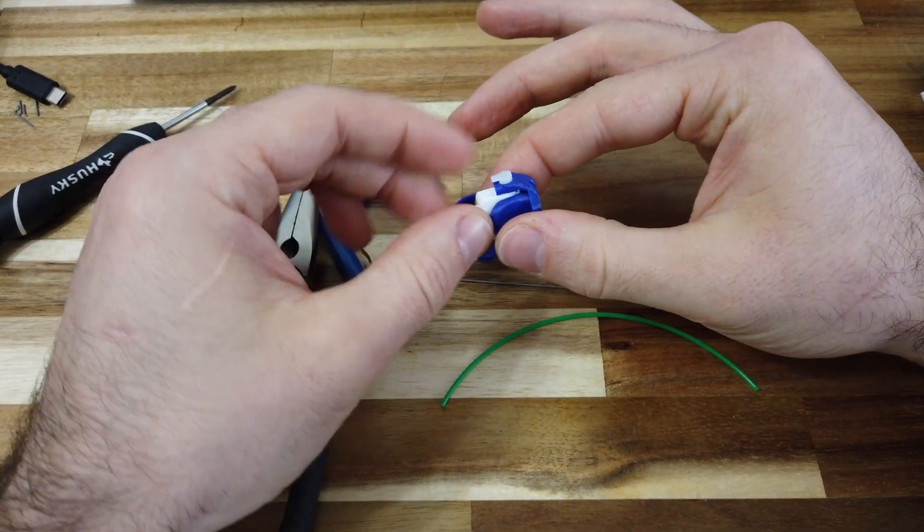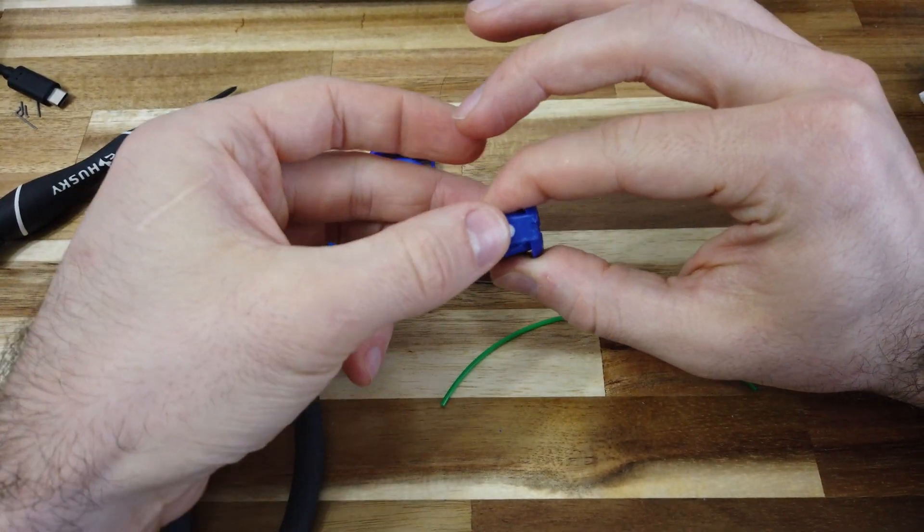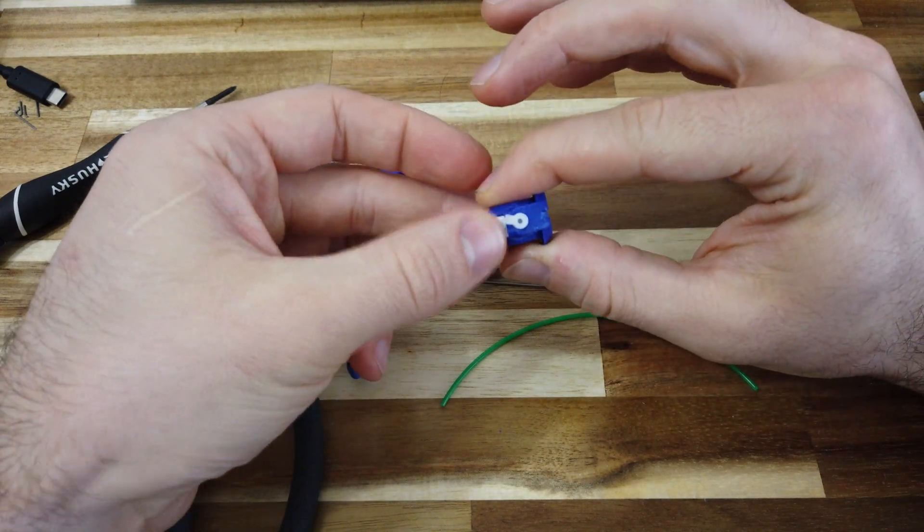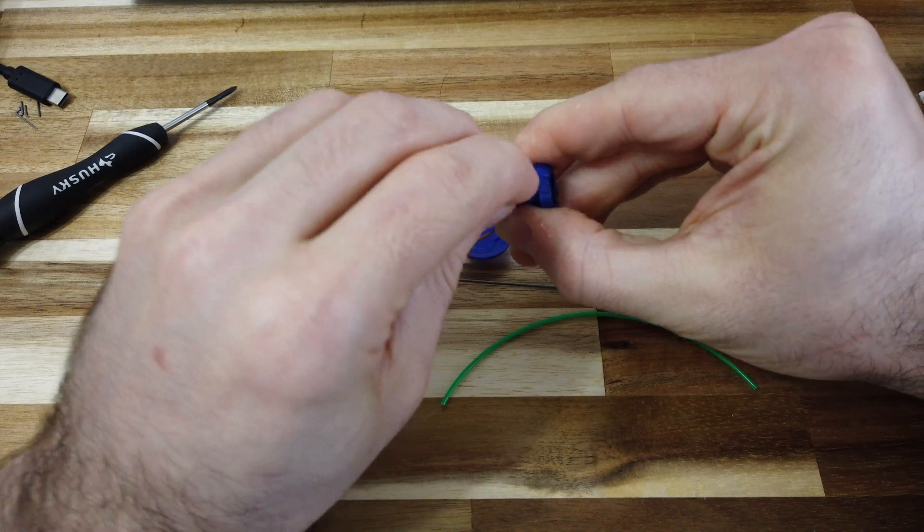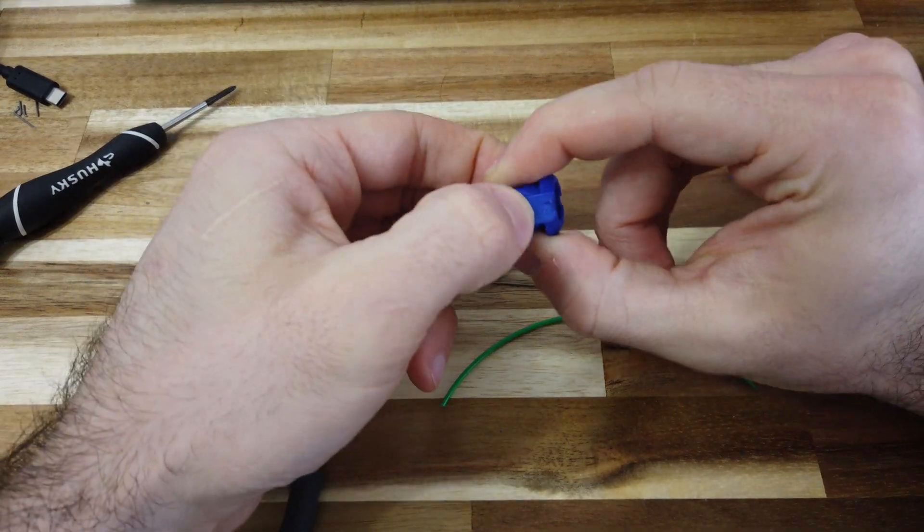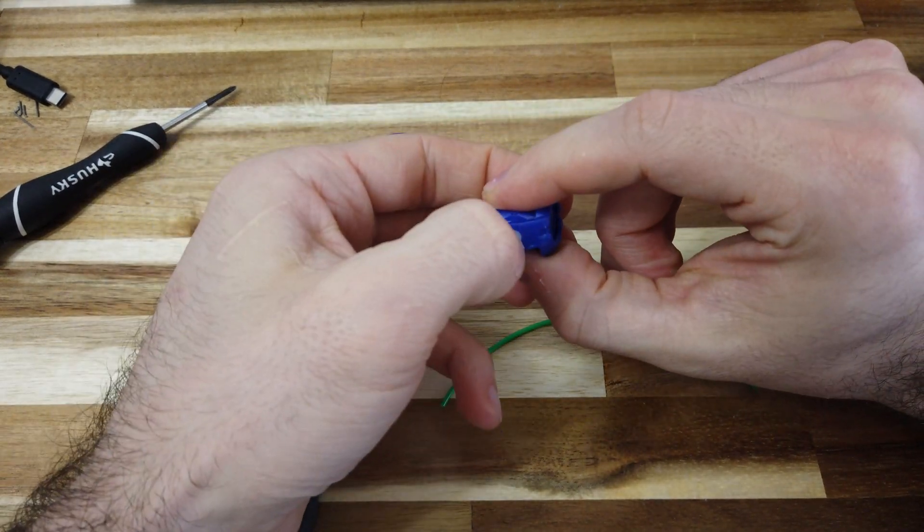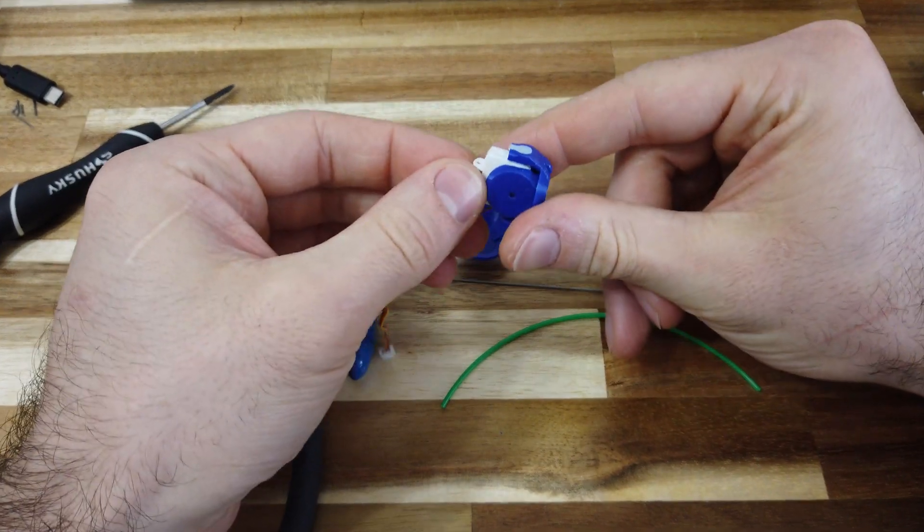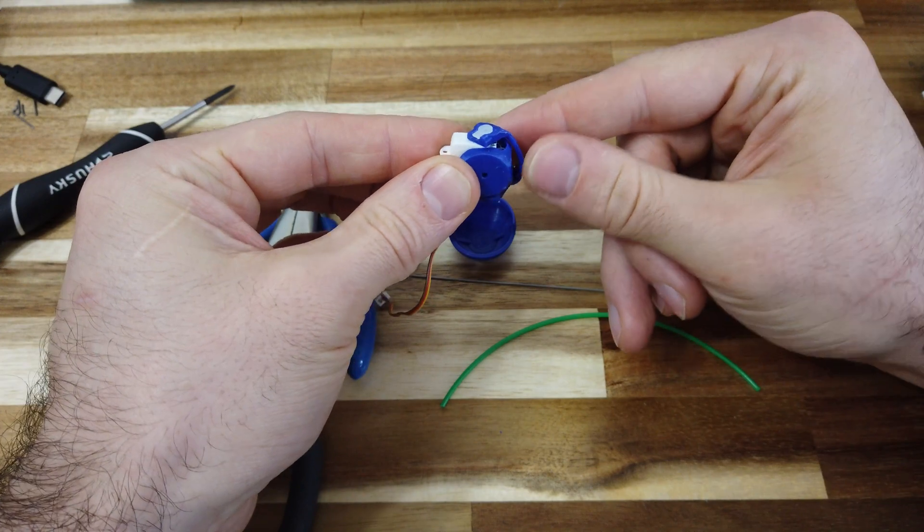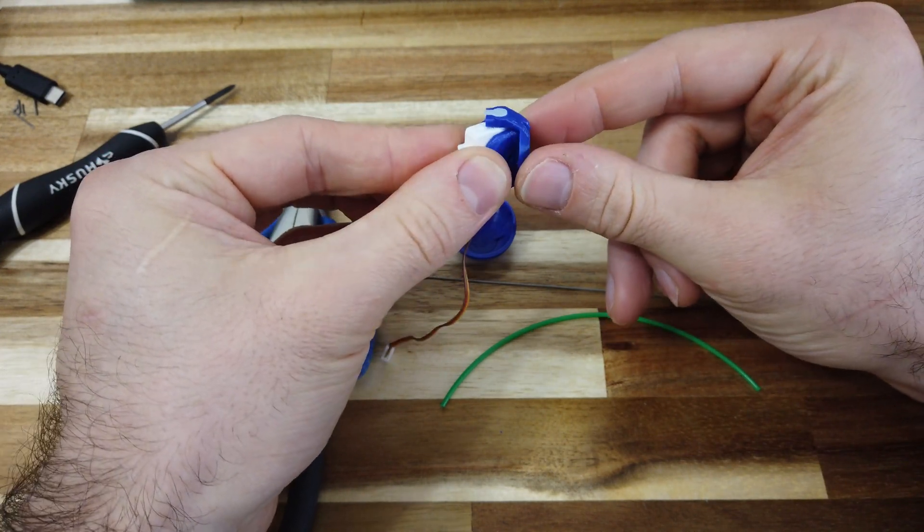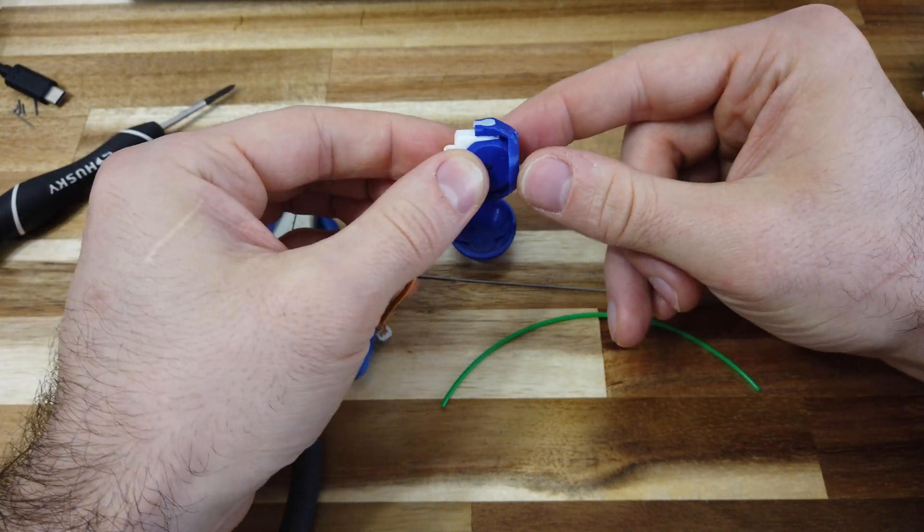Once that is done, you put the servo horn in, make sure it's roughly pointing straight, and then the servo horn has teeth on it, and so does the top of the servo. So you wave it around and then just press it in, and that will couple the left-right part. You can hear the servo gears there moving, which means it's installed and coupled properly.